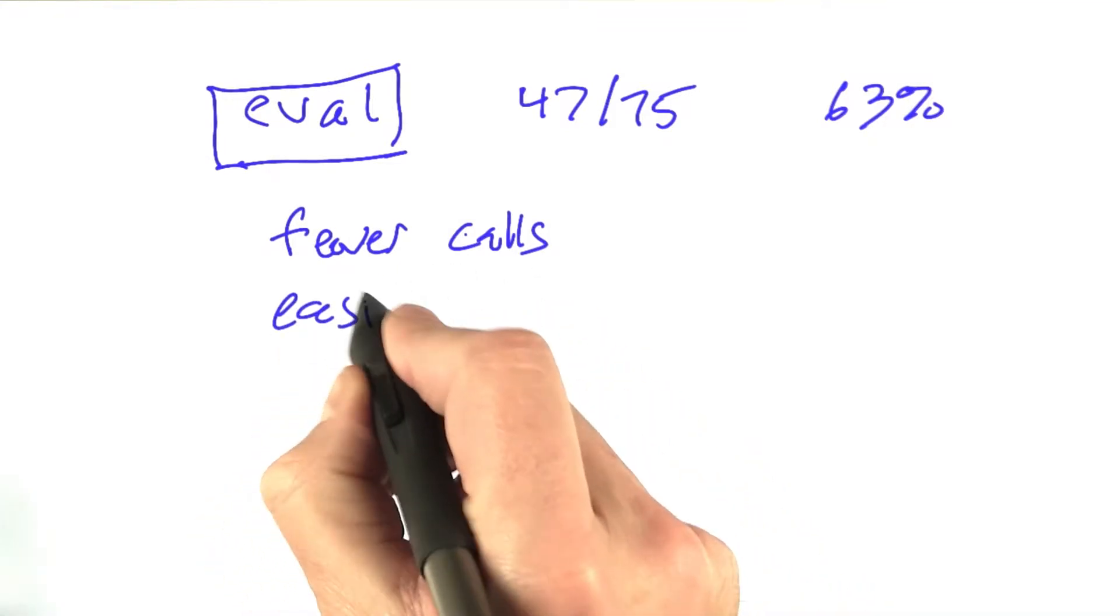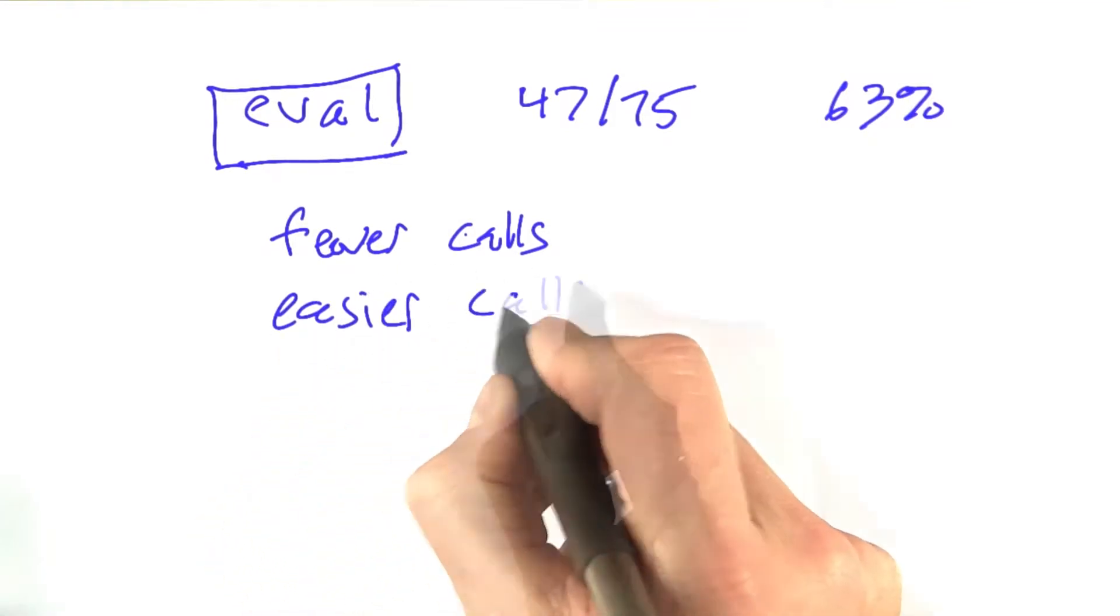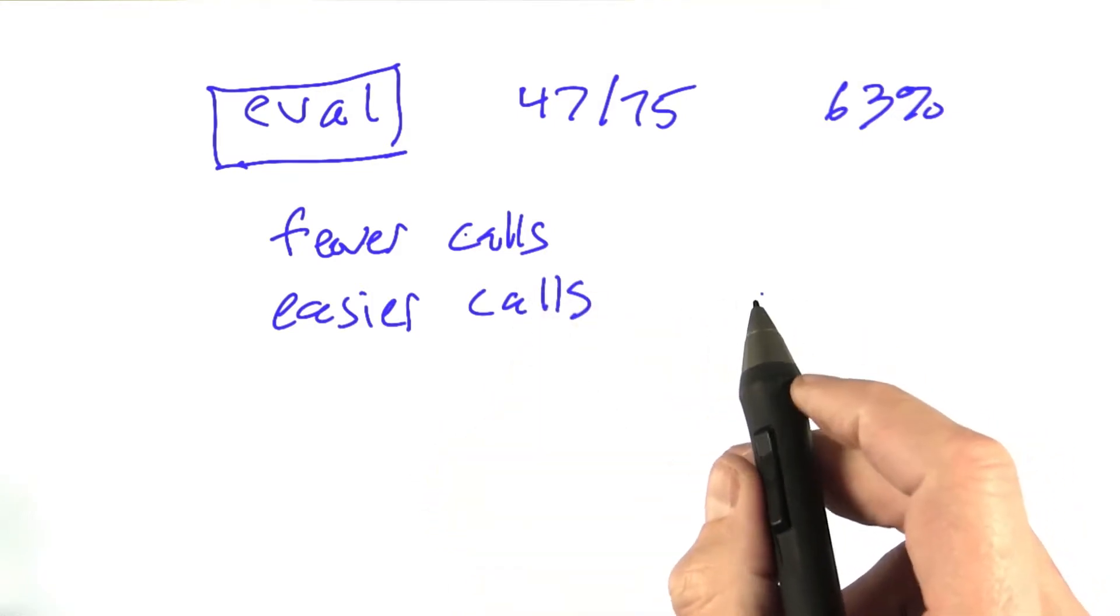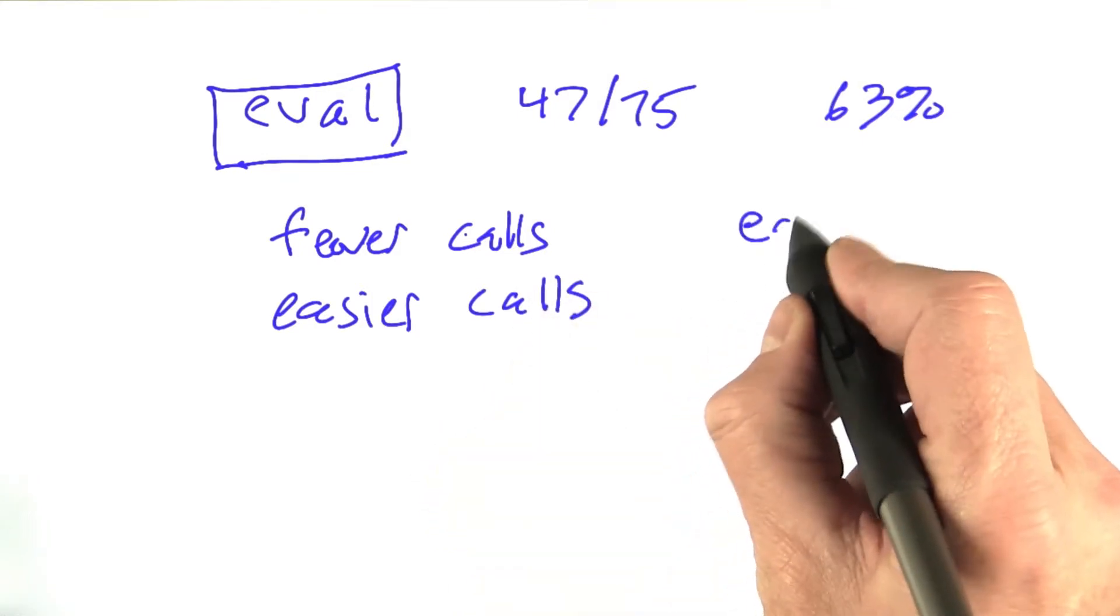Or we could make easier calls to eval. Pass it an argument that's easier for it to evaluate. Let's concentrate on easier first.